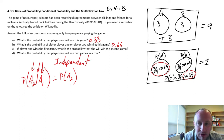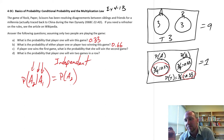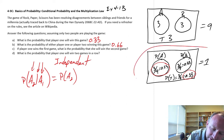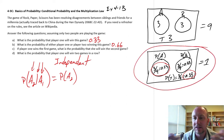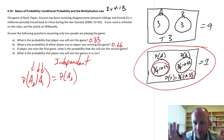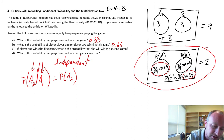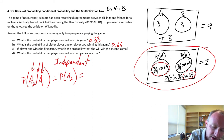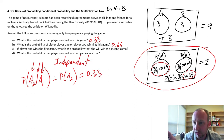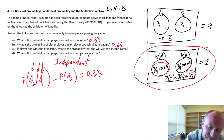Since these are independent events, the conditional probability of winning the second game given winning the first is exactly equal to the probability of winning the second game. The Venn diagram is equally accurate for the first, second, or any game — it makes no difference. So the probability is still 0.33.